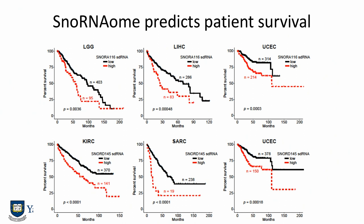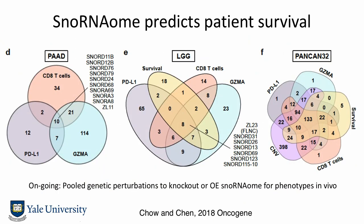For example, if you overexpress a snoRNA, would patients live longer or do worse? We subclassify those in a few different cancer types, like gliomas, liver, endometrium, kidneys, and sarcoma. We now have a map of snoRNAs that associate patient survival and immune signatures to various phenotypes, and we are making a library to knock them all out using the same technology to see which non-coding RNAs can drive oncogenesis in vivo.